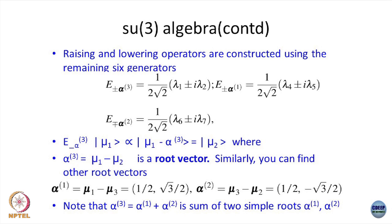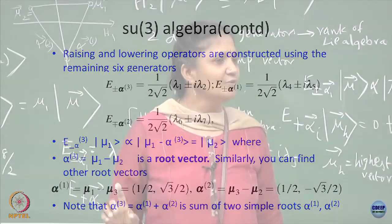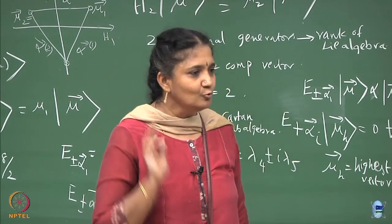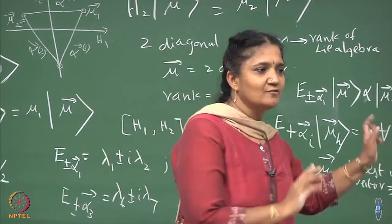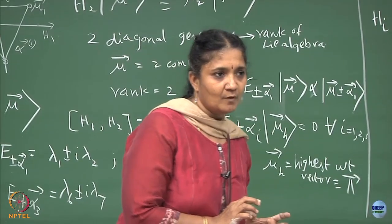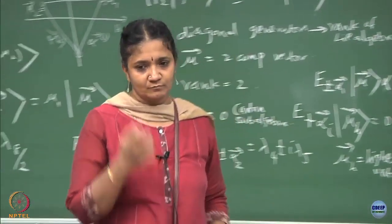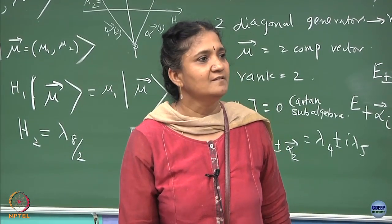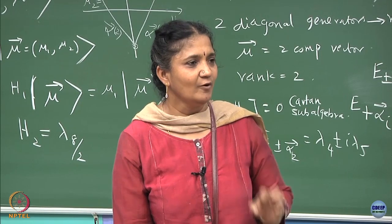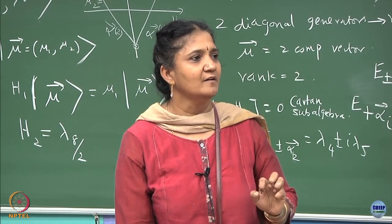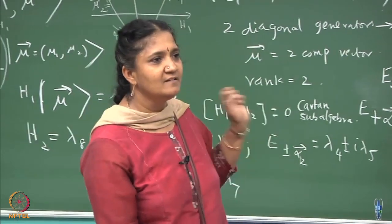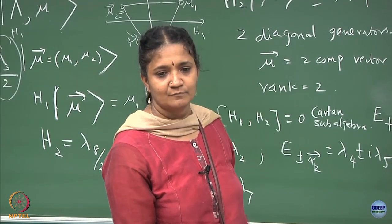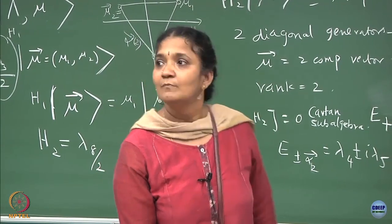For SU(2) you will have only one simple root, SU(3) you will have two simple roots and so on. This is a little heavy, but if you understand by comparison it is not difficult.